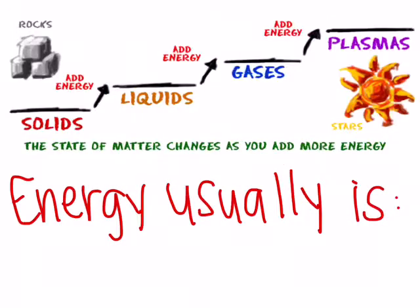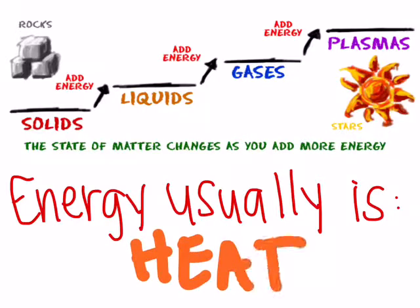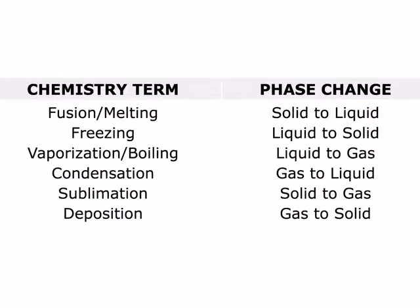Now let's talk about how matter changes into different forms. When matter changes forms it's called a phase change and phase changes are caused by energy. Usually this energy is in the form of heat. When heat is added the phase change goes in this direction, and when heat is taken away then things go back towards solids. These are some really important chemistry words that discuss phase changes.